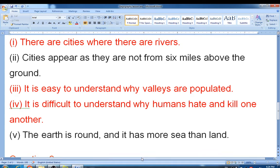The earth is round and it has more sea than land. So right now you have to look out for the logic of geography. So the first sentence belongs because there are cities where there are rivers. This is the logic. Then the third one, it is easy to understand why valleys are populated. These are related, so this also belongs to logical geography.